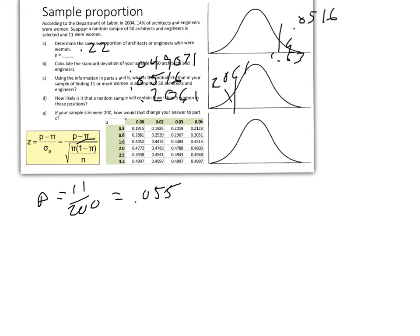But our standard deviation calculation is going to change—that's the denominator here. We would have 0.14 times 1 minus 0.14 over 200. We'll take the square root of all of that. So we have a new standard deviation here, and that is going to be 0.024536.